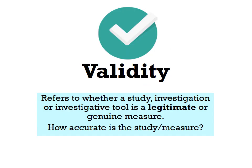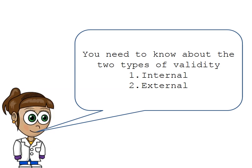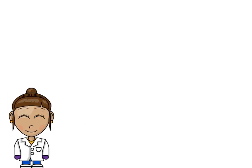The first thing we're going to look at is validity. Validity refers to whether or not a study, investigation, or investigative tool is a legitimate or genuine measure — basically, how accurate is the study or measure we are using. We need to know about two different types of validity: internal validity and external validity.